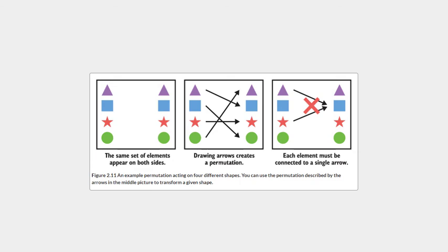SHA-3 is a cryptographic algorithm built on top of a permutation. The easiest way to understand a permutation is to imagine the following: you have a set of elements on the left and the same set of elements on the right, and you trace arrows going from each element on the left to the right. Each element can only have one arrow starting from and terminating to it. You now have one permutation. Figure 2.11 illustrates this principle. By definition, any permutation is also reversible, meaning that from the output we can find the input.